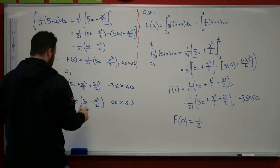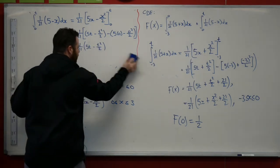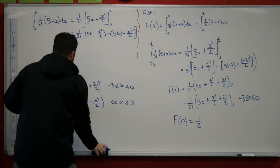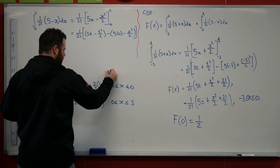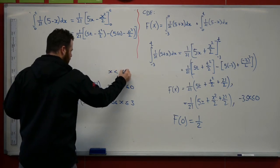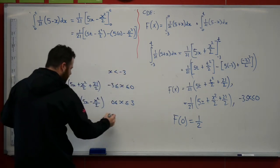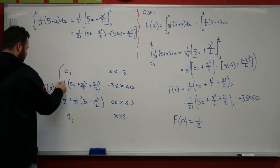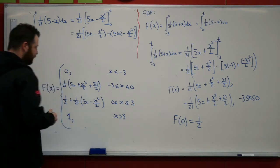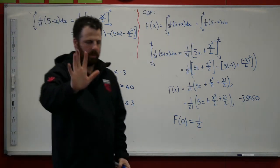It is 0 for values of x that were less than minus 3 and it's going to be 1 for values of x that were greater than 3. All right. So we're just pausing. All right, guys. So summarizing this.